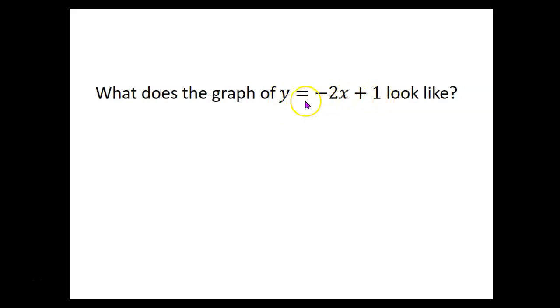In fact, this equation is in slope-intercept form, so I can say right away that this would be a straight line with a slope of negative 2, and a y-intercept at 1. What about the equation y equals 4x minus 5? What does that graph look like? Well, that would be another straight line. This one would have a slope of 4 and a y-intercept down at negative 5.